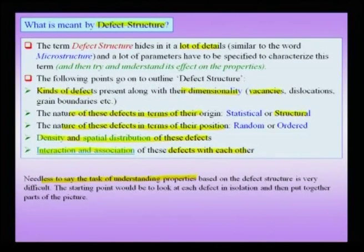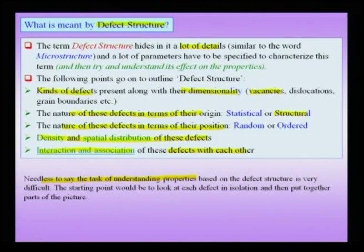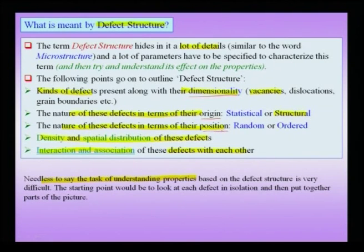I am dealing with a difficult problem in materials science: understanding the defect structure across multiple length scales — the spatio-temporal evolution of the defect structure — which is key to understanding how material behavior depends on microstructure. What I would like to do in the coming slides is understand these defects in terms of their dimensionality, their origin, their positional origin, their density, their spatial distribution, and last but not least, their interaction and association.